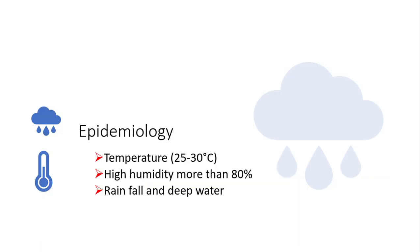What are the epidemiological conditions that favor the development of bacterial blight of rice? A temperature range of 25 to 30 degrees centigrade is favorable along with high humidity of more than 80%. Similarly, rainfall and deep standing water help the development of the disease.